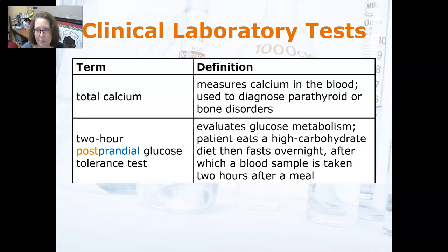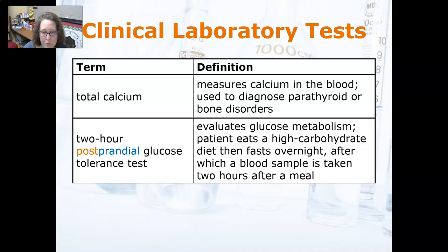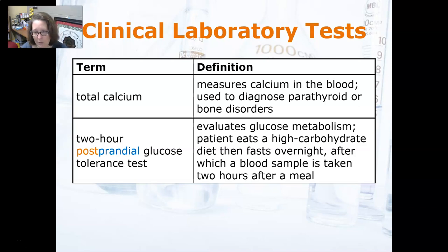The Total Calcium Level test measures calcium in the blood and is used to diagnose parathyroid or bone disorders. You can also do an ionized calcium, which is a different test. The Two-Hour Postprandial Glucose Tolerance Test is simply checking the blood sugar two hours after a person has eaten a meal, especially a high-carbohydrate meal.